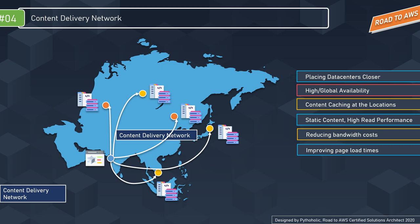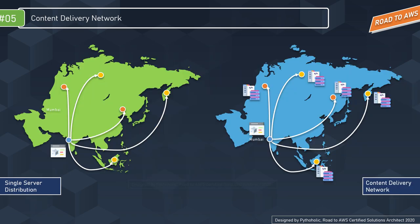CDN nodes can be deployed in multiple locations, helping reduce bandwidth costs, improve page load times, and increase global availability of content. You don't need to host a whole new server near your customer — you can use a CDN to improve availability. With CDN, proxy servers are placed close to users so that static content like images and video files can be accessed at a much faster rate.